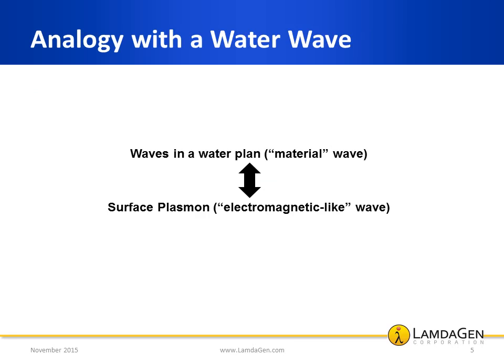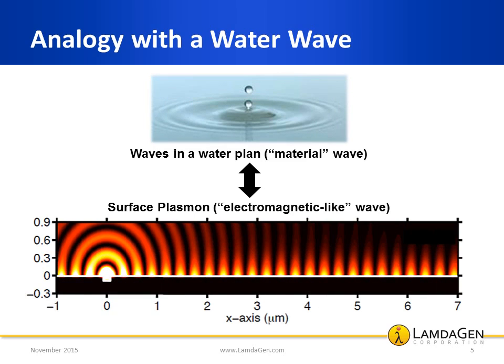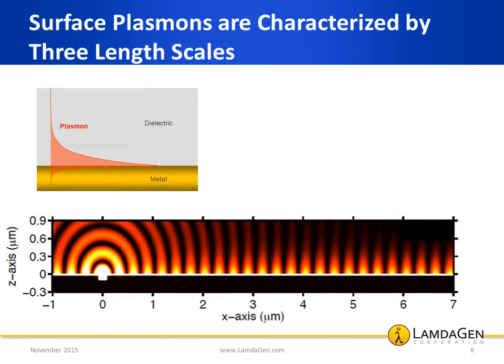To help visualize the surface plasmon wave, picture a wave produced by an object hitting the surface of water. It generates a propagating wave that extends away from the splash point. Analogous to the water waves, in the case of surface plasmons, we can identify three characteristic distances that are pictured in the schematic shown here.